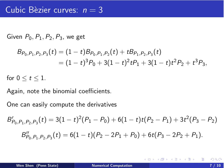One can now easily compute the derivatives of the cubic Bézier curves. The first derivative takes this form, which is a quadratic polynomial. Differentiate once more in t, and you get the second derivative, which is a linear polynomial.